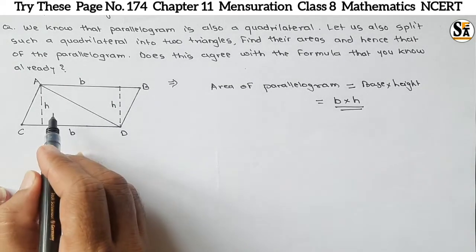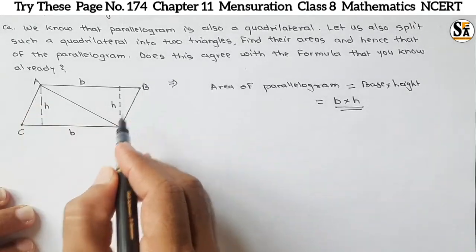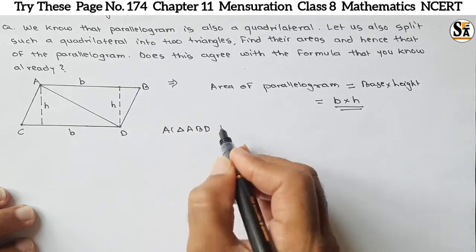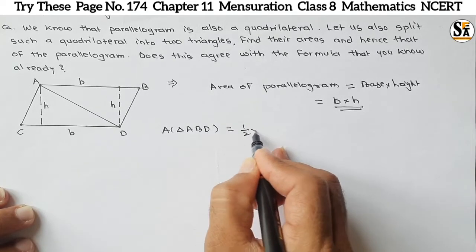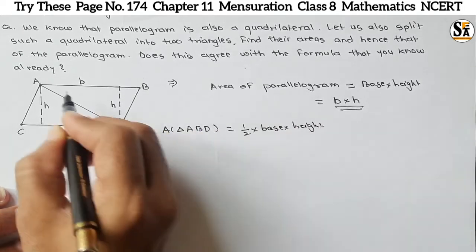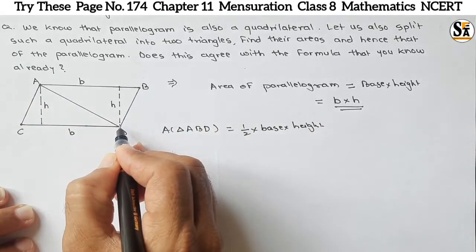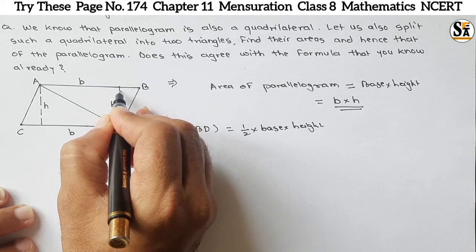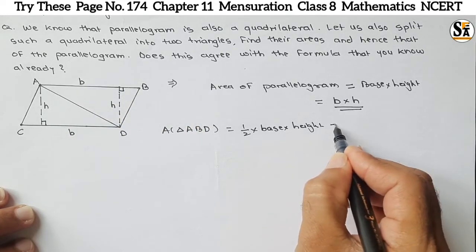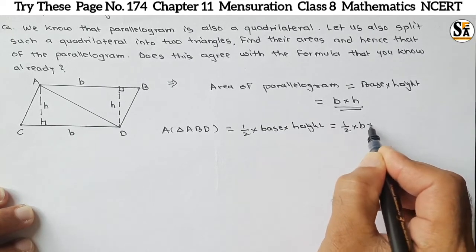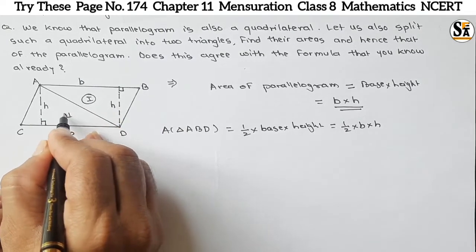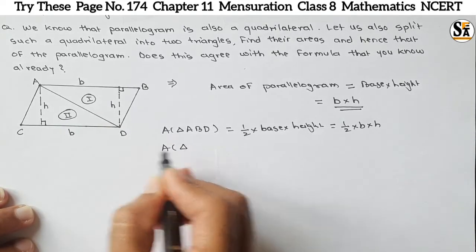So now let's find the area of triangle ABD. Area of triangle ABD: we know area of a triangle is one-half into base into height. Here the base is AB, and height H is given — the perpendicular distance to the base. So the base is B and height is H. We got the area of this first triangle as one-half into B into H.